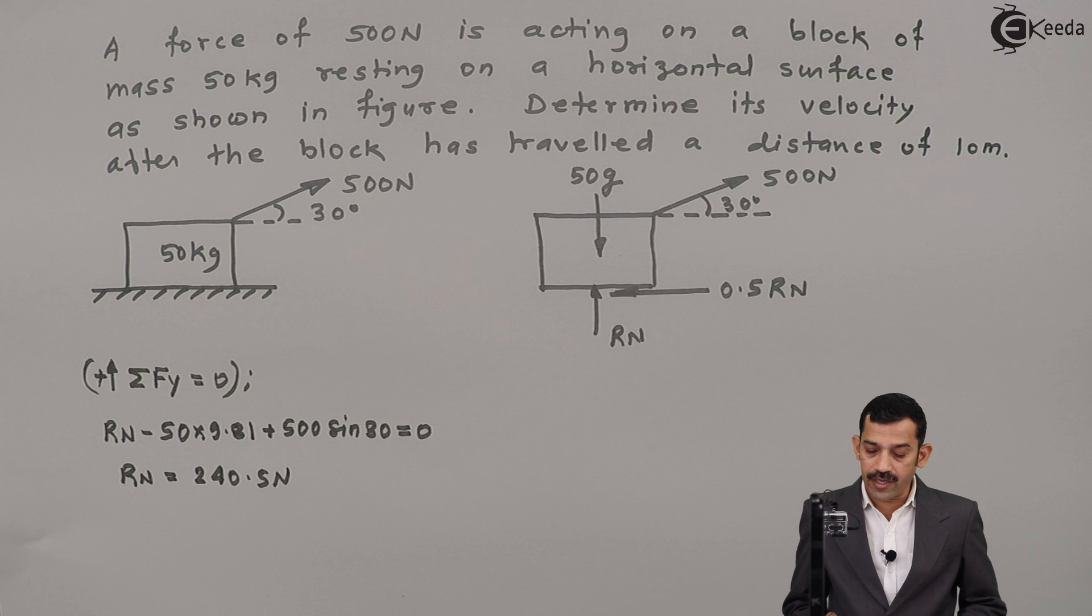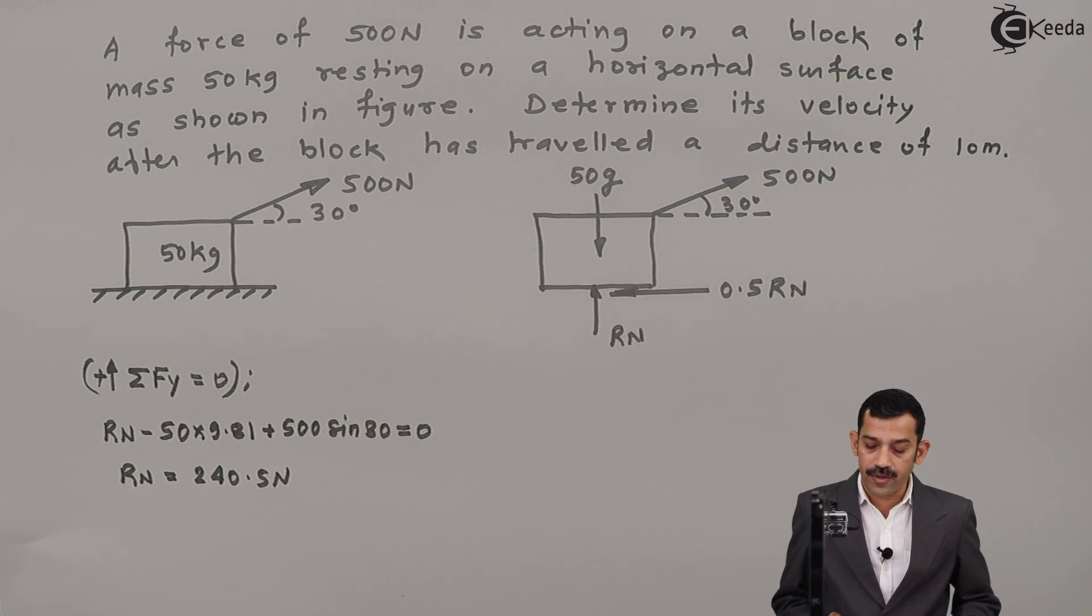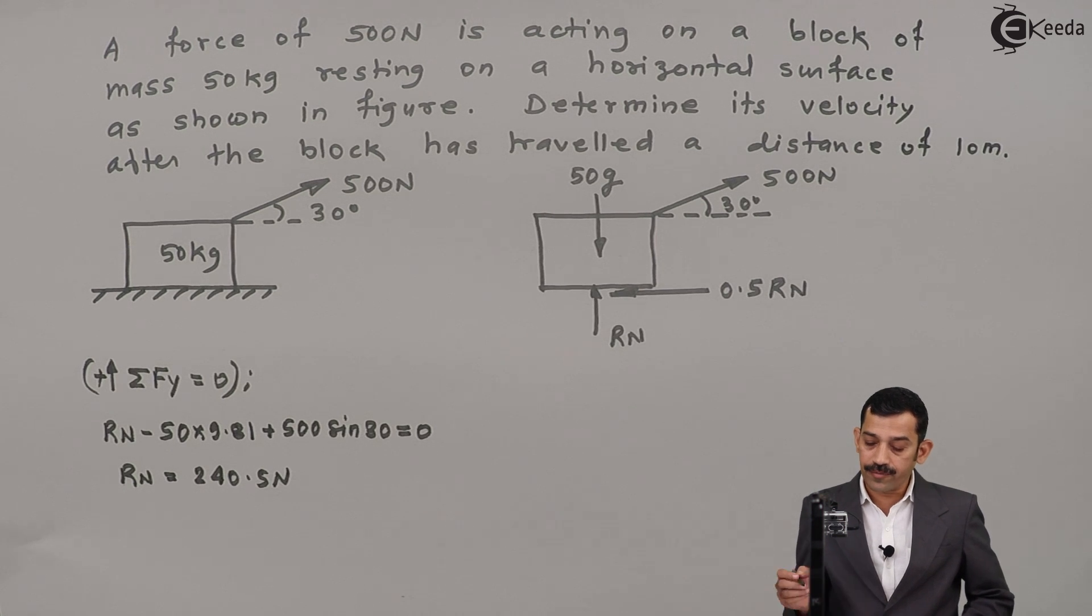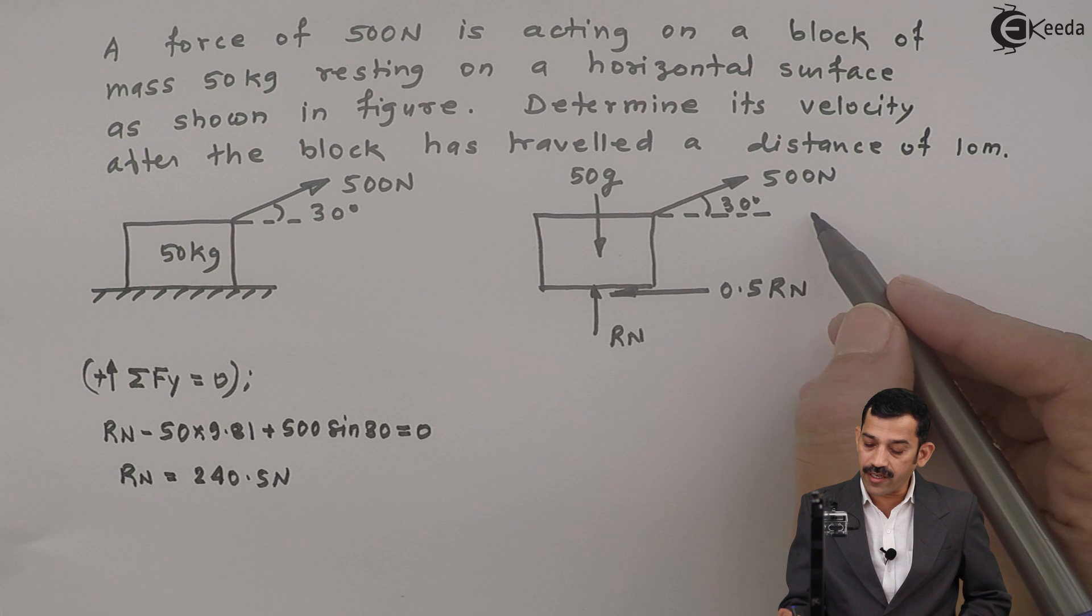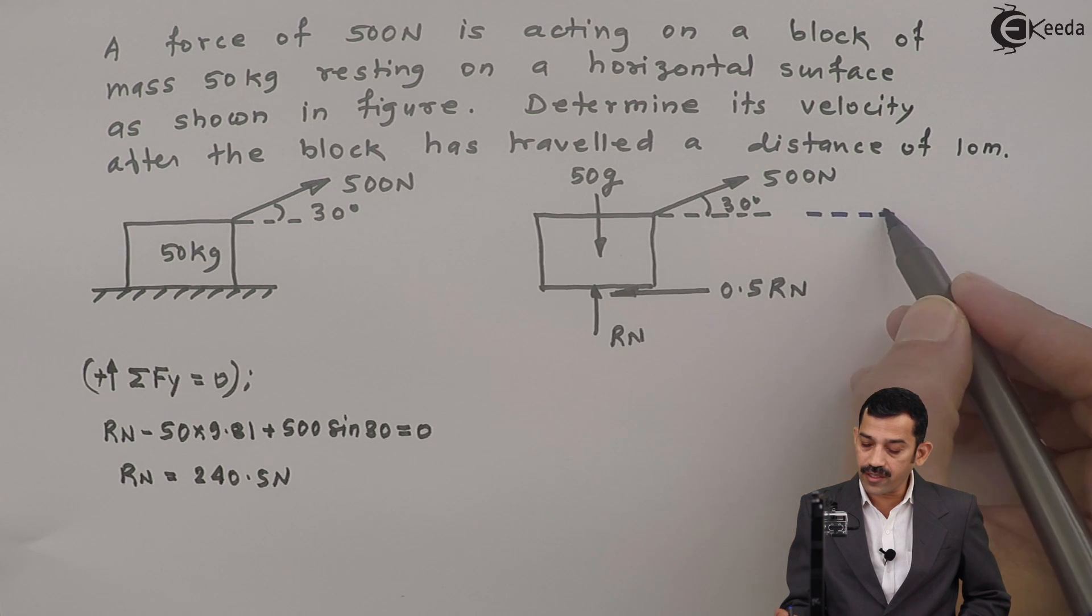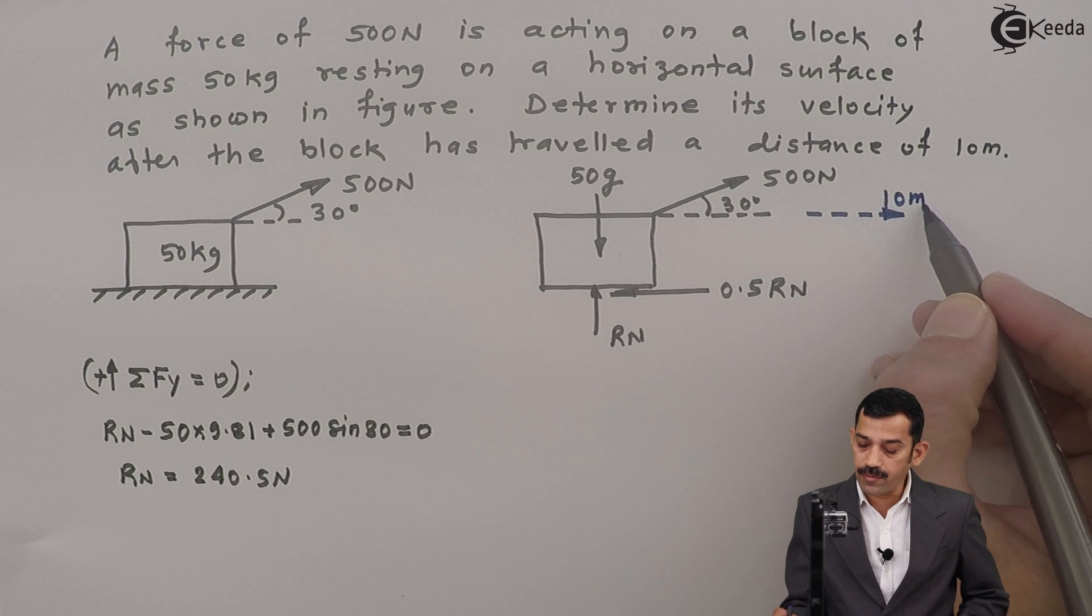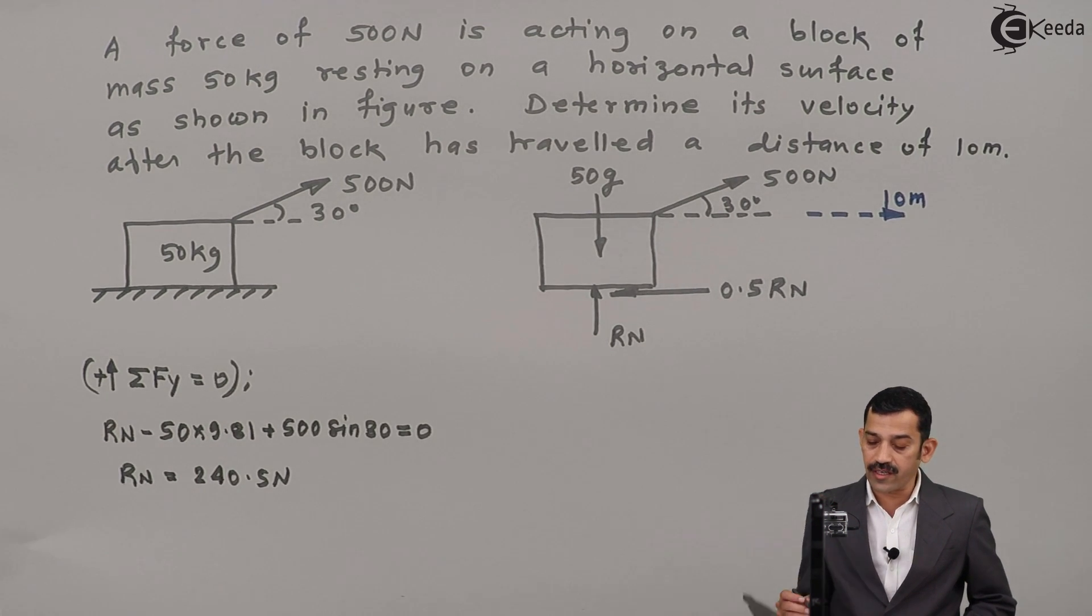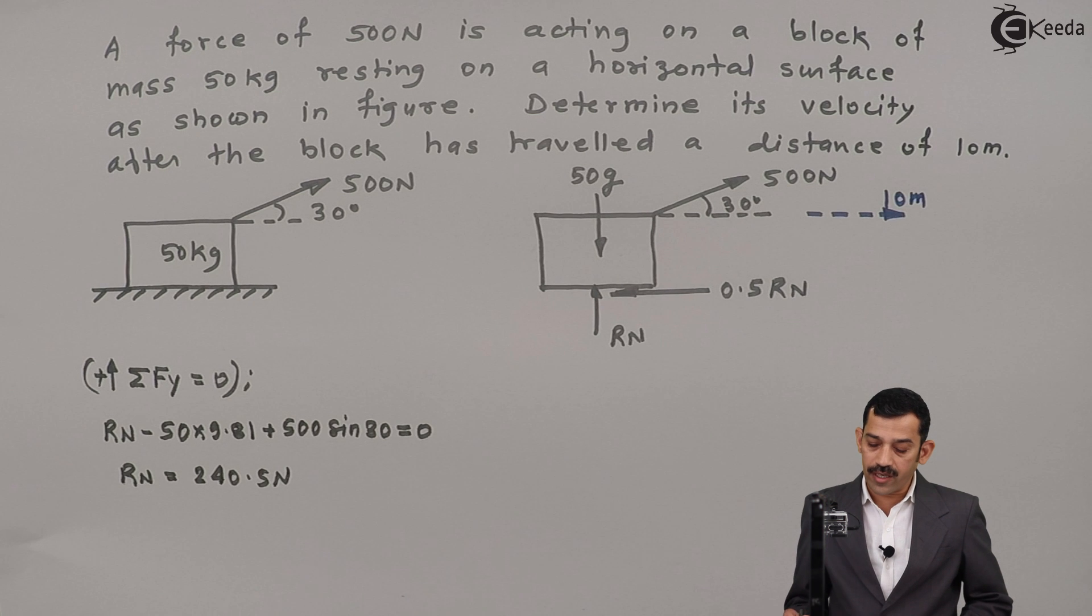Once we will get normal reaction, now easily applying work energy principle, you will get velocity of this block. Displacement of block is in rightward direction. It is given displacement as 10 meter. Rightward or leftward is not given, but as 500 Newton force is acting such that its horizontal component acts in rightward direction, block has to move in rightward direction.